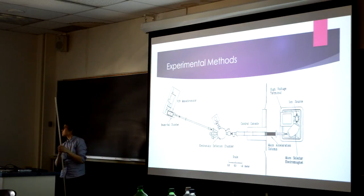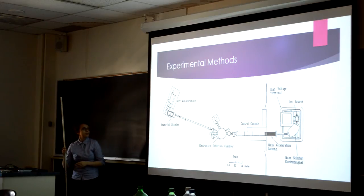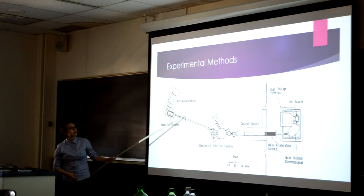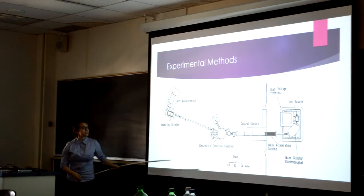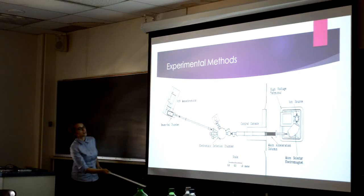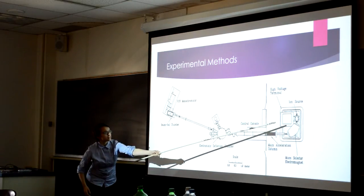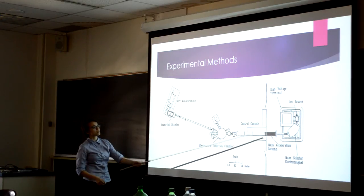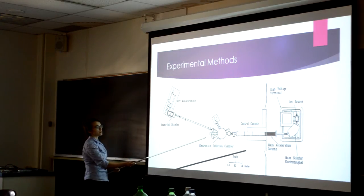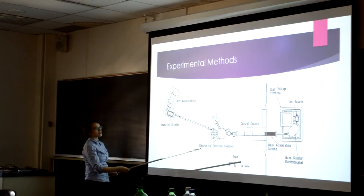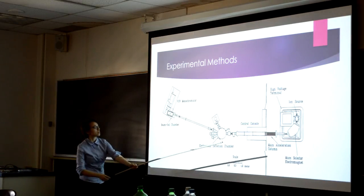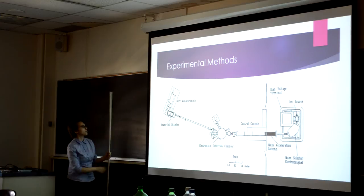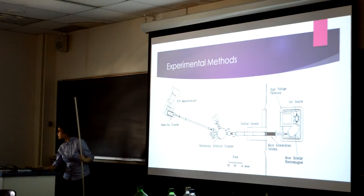I'll give a brief run-through of the experimental setup. This is the Toledo Heavy Ion Accelerator, also known as THIA. Here is the ion source, which creates those singly ionized tin ions. They are run through a mass selector — a spectrometer — to select out the correct isotope, and then they are accelerated into the beam coil chamber, which is where the magic happens.